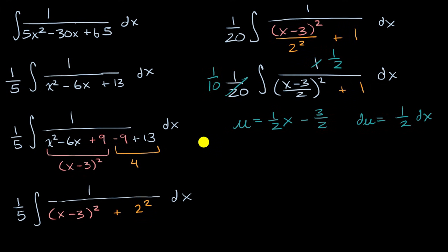Doing my u substitution, I get one-tenth times the integral of, well, I have one-half dx right over here, which is the same thing as du. Then I have one over u squared plus one.